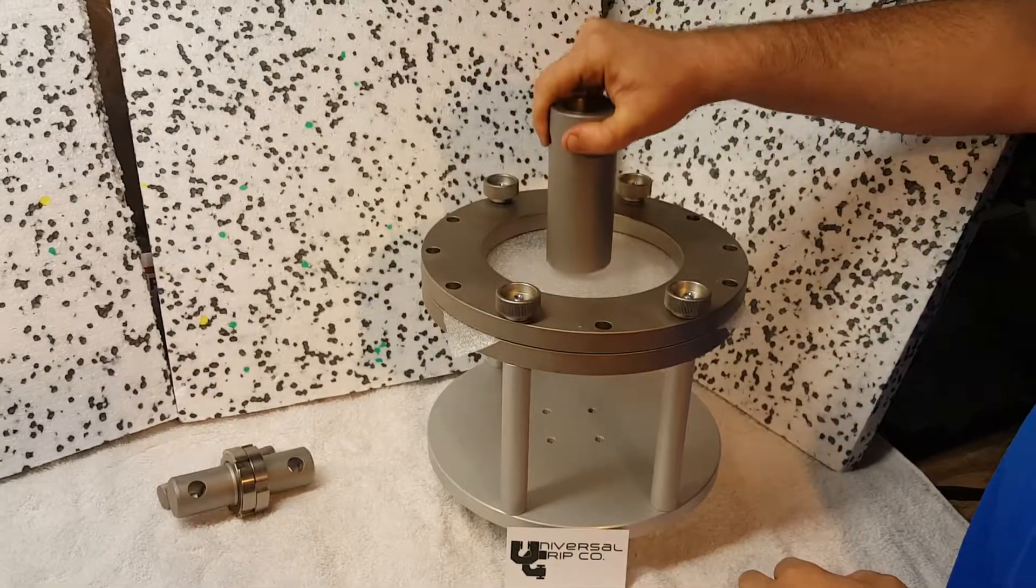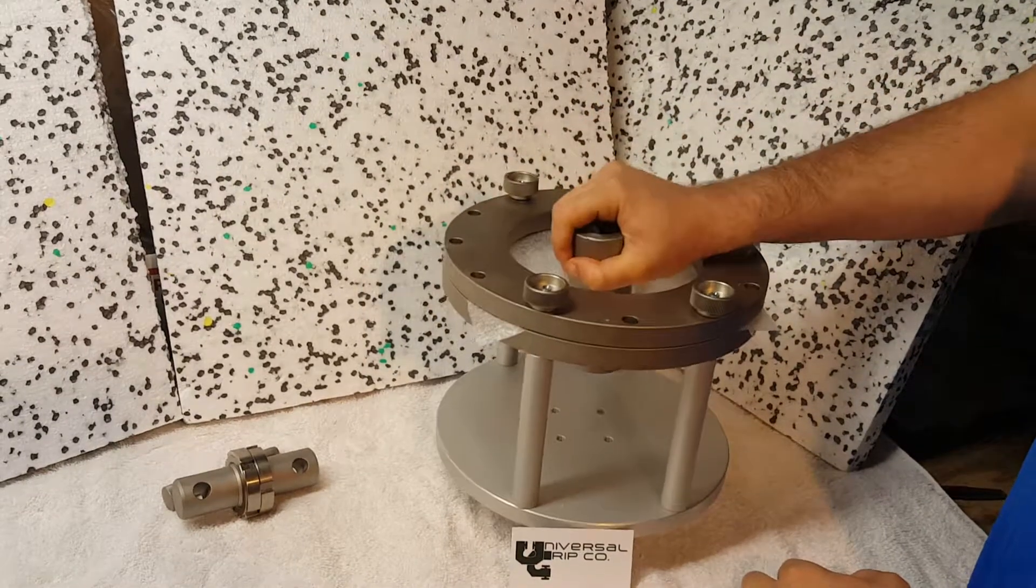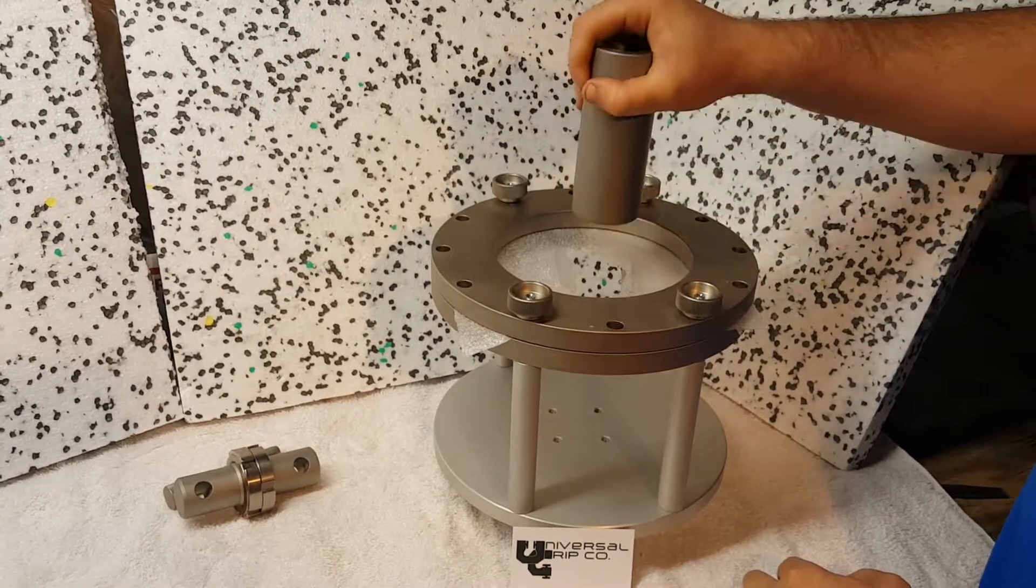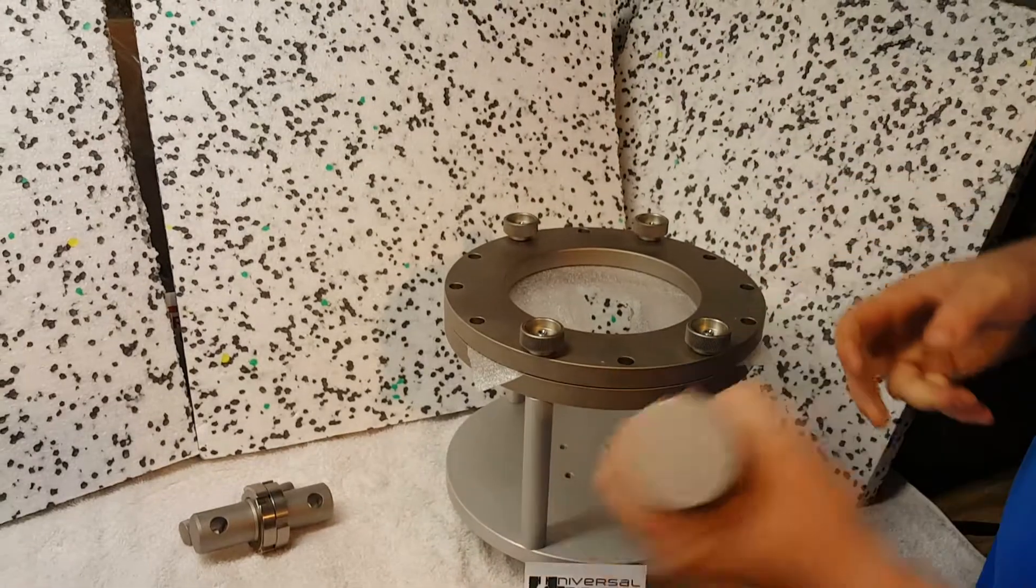This would load onto the machine just like this, and then it would slowly come down and puncture the sample. There we go. And then on your machine, you would read the max force.